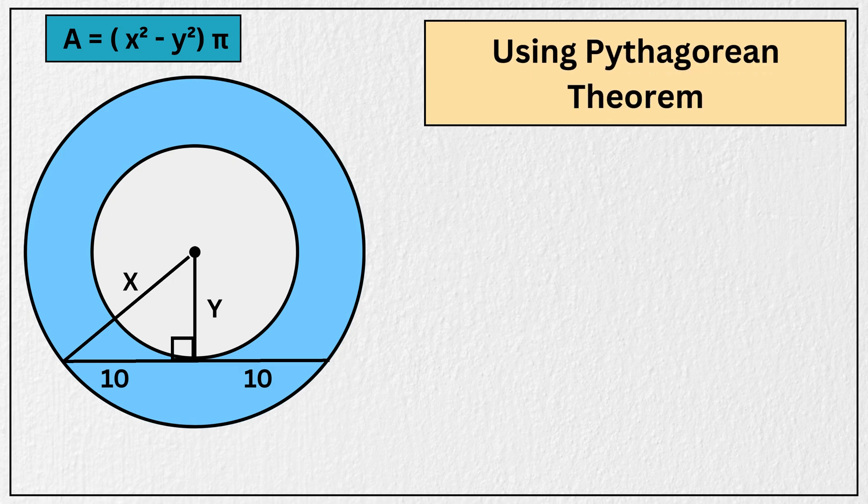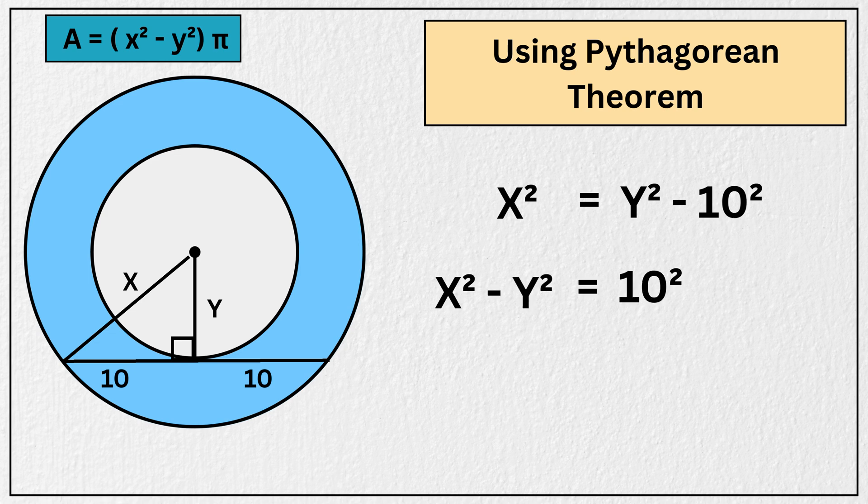So using everyone's favorite, Pythagorean theorem, we have x squared equal to y squared plus 10 squared. Subtracting y squared from both sides, we get x squared minus y squared equals 10 squared, or 100.